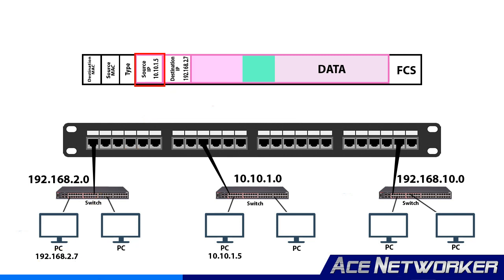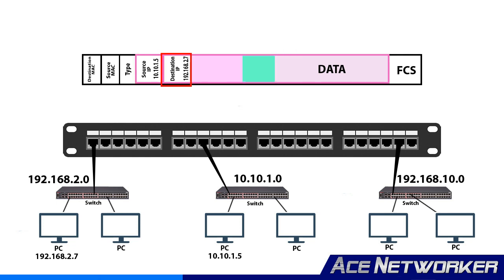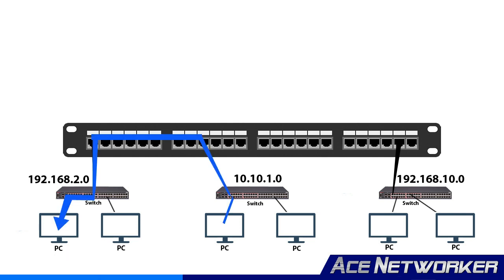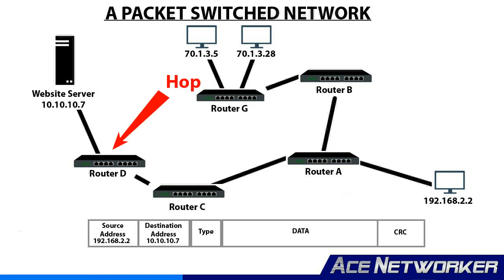When data comes in on one of the ports on a router, the router reads the network packet portion of that data and looks at the network address information to determine its destination. Using the information in its routing table, it sends that packet to the next network to allow the data to ultimately reach its final intended destination. In this process, the data may have to go through several routers — each of those steps is called a hop in the networking industry.